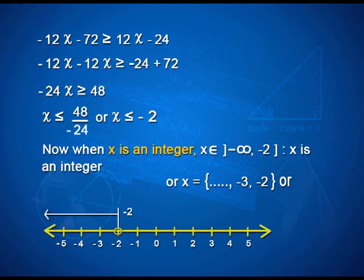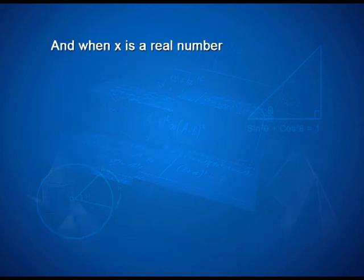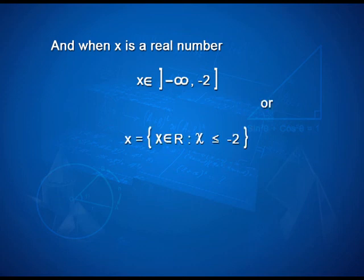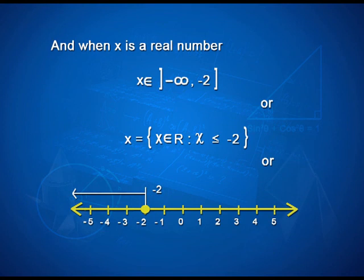In set form the solution is expressed as shown on the screen. On the number line, it is shown with a colored circle at minus 2 and the arrowhead pointing on the left of minus 2, noting that this number line is for integers only. When x is a real number, in interval form x belongs to minus infinity to minus 2, open bracket at minus infinity and closed bracket at minus 2. In set form, it is all x belonging to R such that x is less than or equal to minus 2, and on the number line, a colored circle at minus 2 with the arrowhead pointing left.